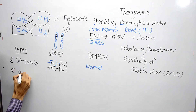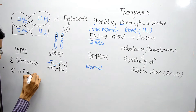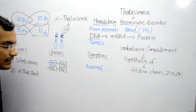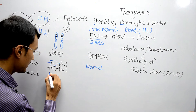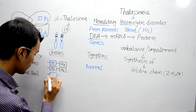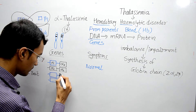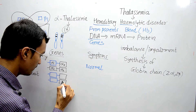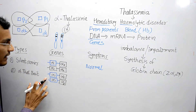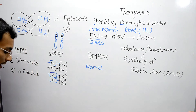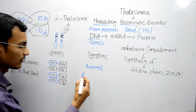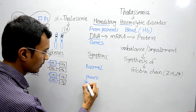The second subtype is Alpha Thalassemia Trait. In Alpha Thalassemia trait, two genes are missing — indicated in blue — and the other two genes are present and functional: Alpha 2 gene and Alpha 1 gene. The two Alpha 1 genes that code for Alpha 1 globin chains are missing, so this person will have minor anemia.